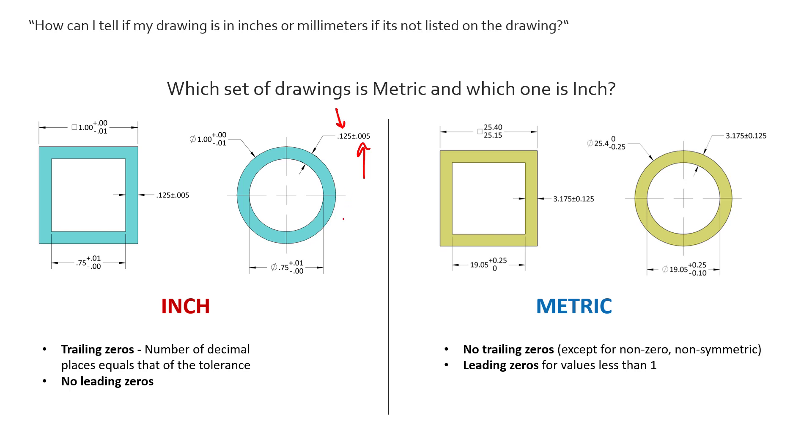Now if nominally this dimension was only 0.12, we would have to add a trailing zero in order for the decimal places to match the tolerance. And we see here we have two decimal places in the tolerance and so we have two decimal places in the dimension.